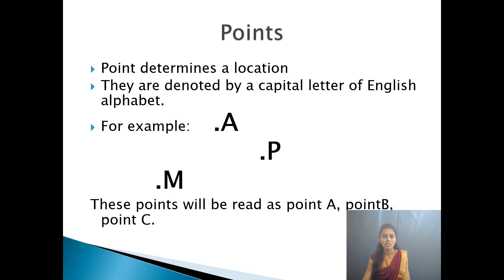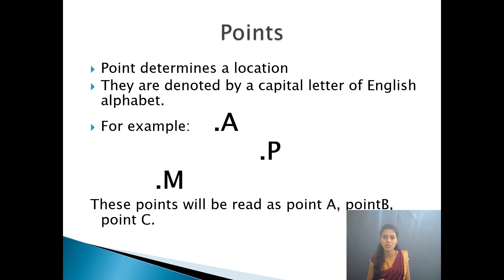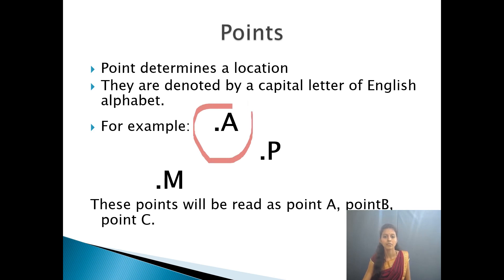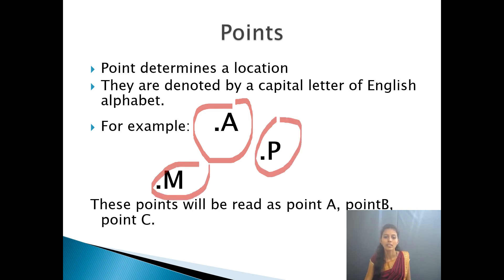First, what is a point? A point is a particular position on a plane. What we see in English as a full stop — that is a point, but it will be a very tiny structure in math. On a plane, if we mark a small dot, that represents a point. A point is represented using capital letters — this is point A, this is point B, this is point M, and so on.